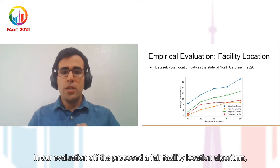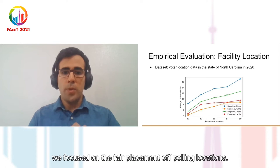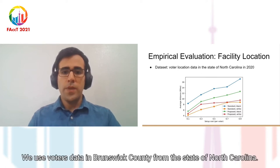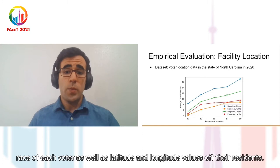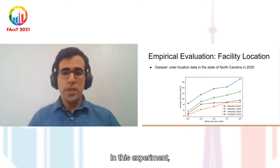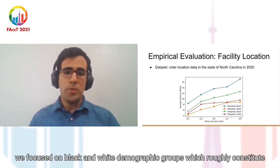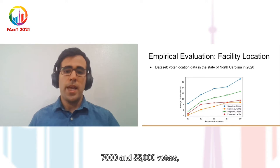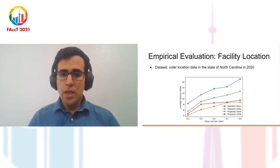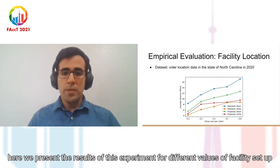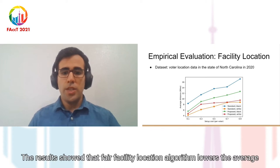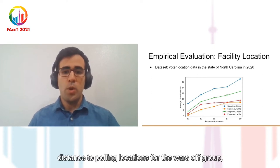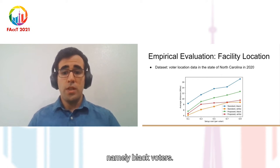In our evaluation of the proposed fair facility location algorithm, we focused on the fair placement of polling locations. We use voters data in Brunswick County from the state of North Carolina. This data contained race of each voter as well as latitude and longitude values of their residents. In this experiment, we focused on black and white demographic groups, which roughly constitute 7,000 and 55,000 voters respectively.